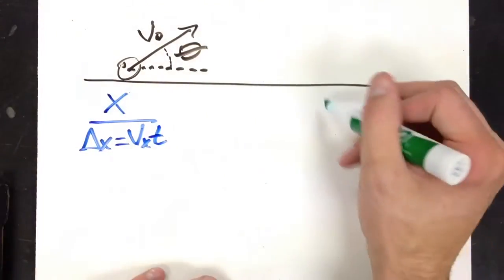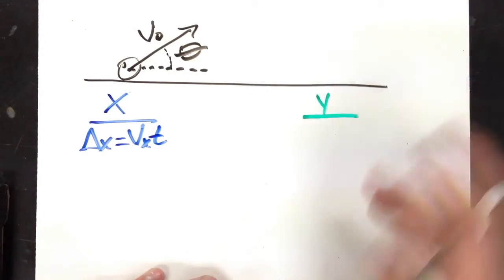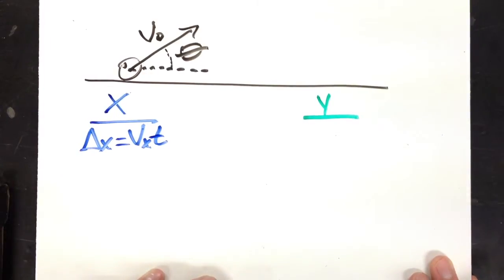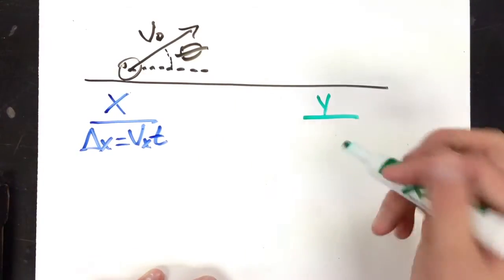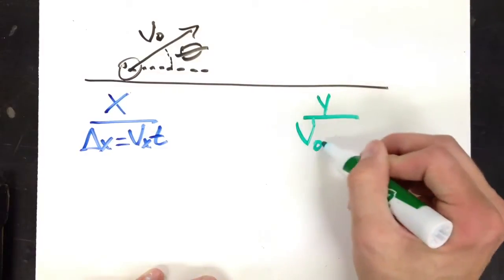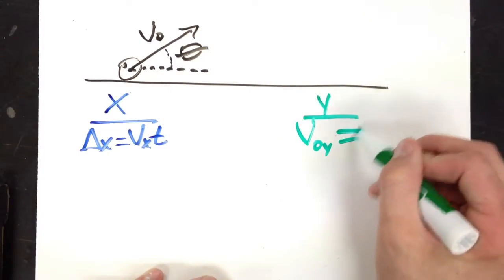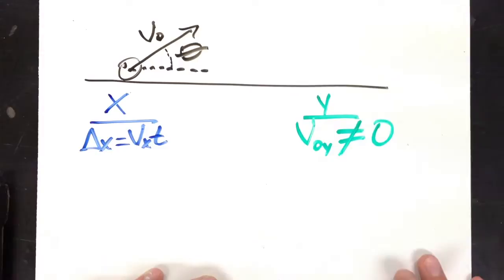And still, for the y dimension, all of our kinematics are at our disposal. The only problem, though, is that when it's fired at an angle, my initial y velocity is not 0.